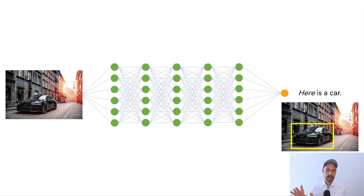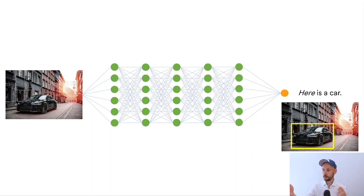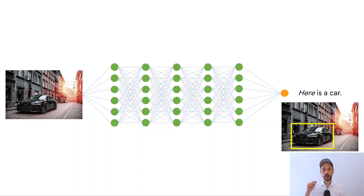On top of detection, you can run classifications again. So you might want to run a classifier on the detected car for the color of the car. The classification will tell you the color of the car once you've found the car inside your image.